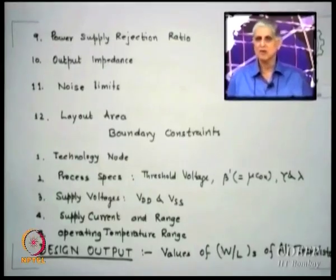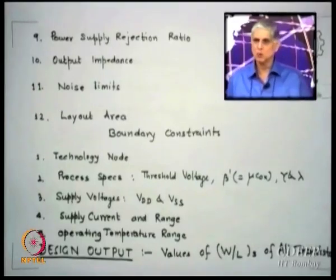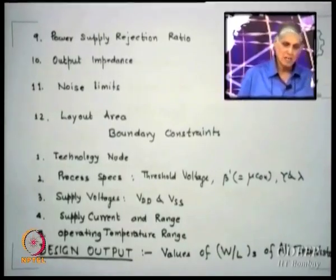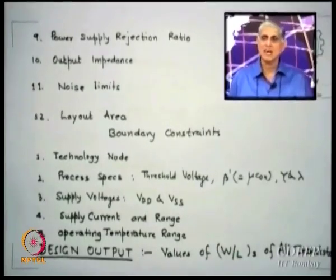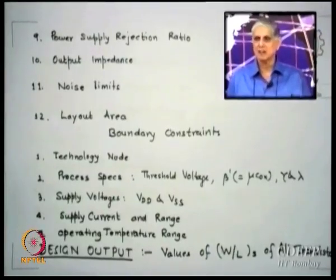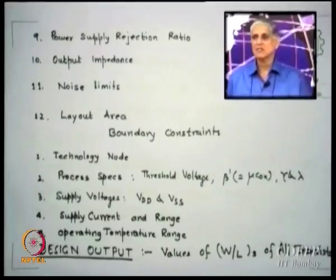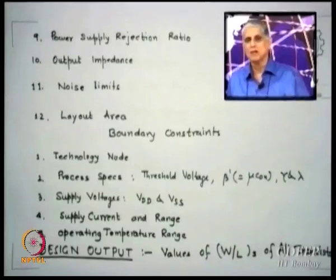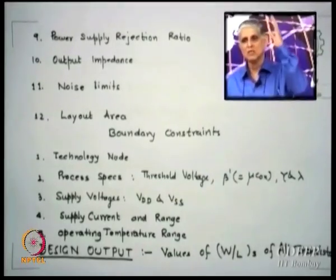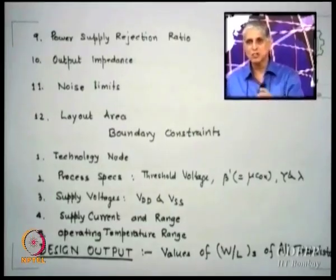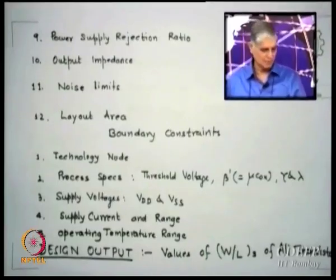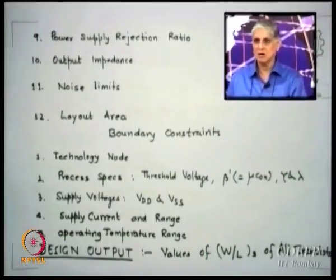For the 0.8 micron node, a 5-volt total supply is required, so VDD is 2.5 and VSS is minus 2.5, giving a total swing of 5 volts. There is also a maximum supply current the chip can use before it starts heating — I_max is sometimes provided. It is not a value you use in analysis, but it must never be exceeded. The power supply resistance also decides what maximum current can be drawn, so you must know how much is available to you. Finally, the operating temperature range over which your chip will operate must be known.